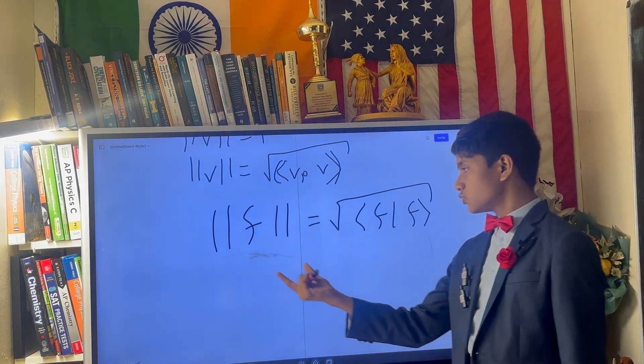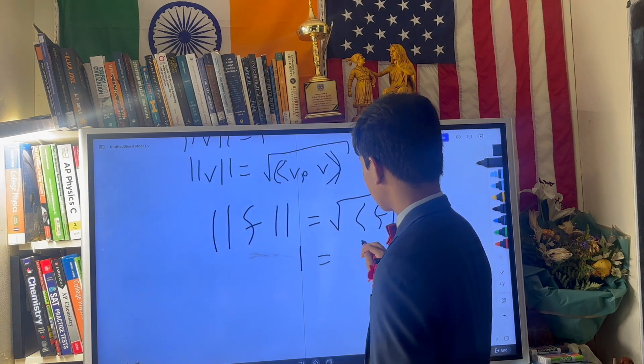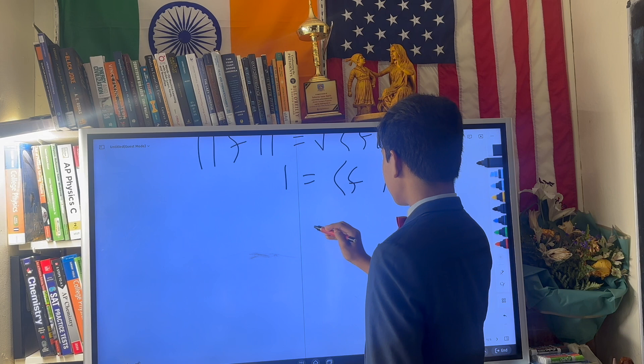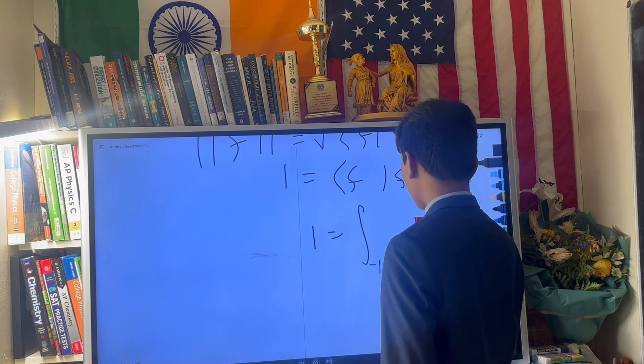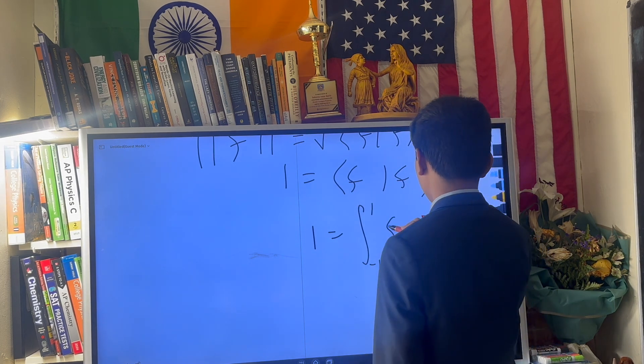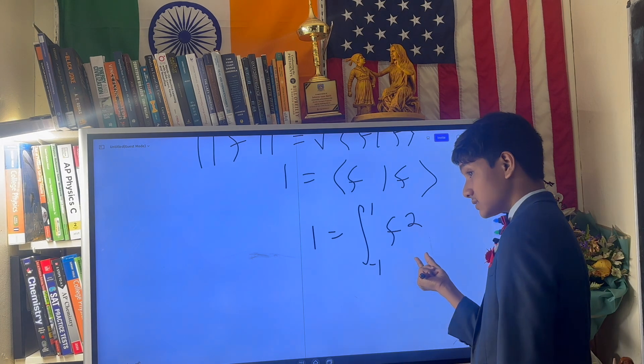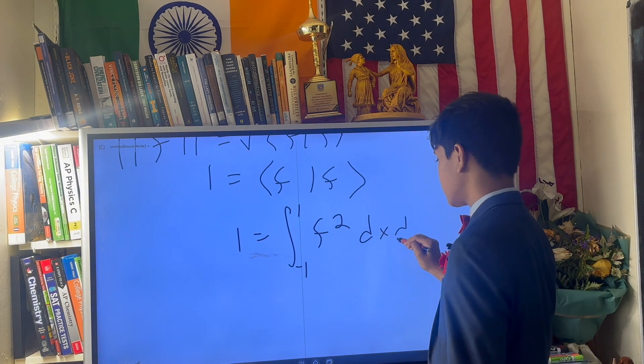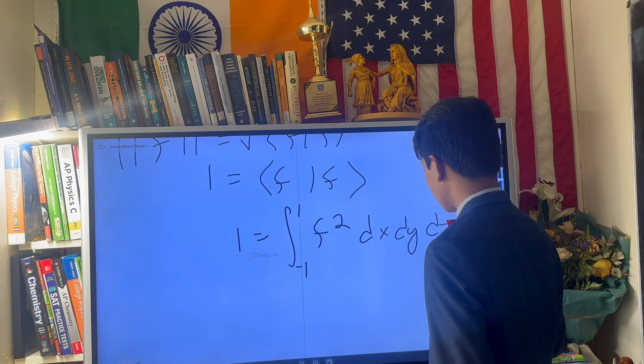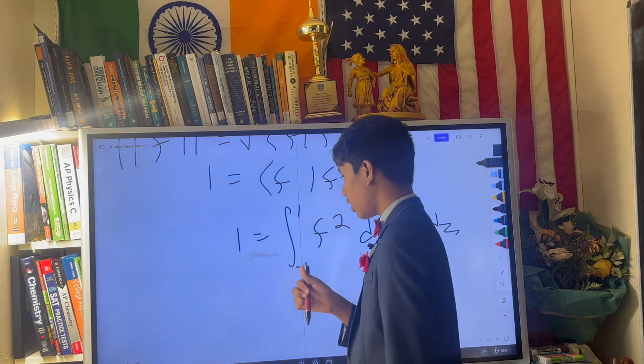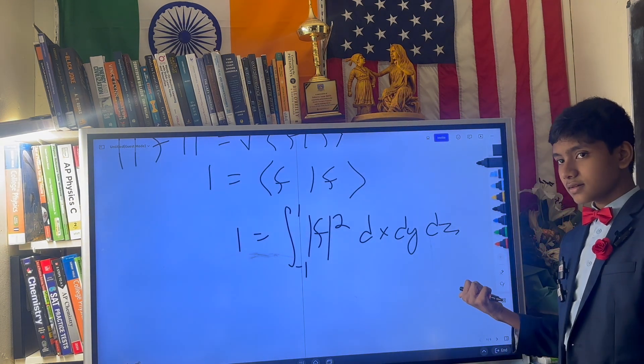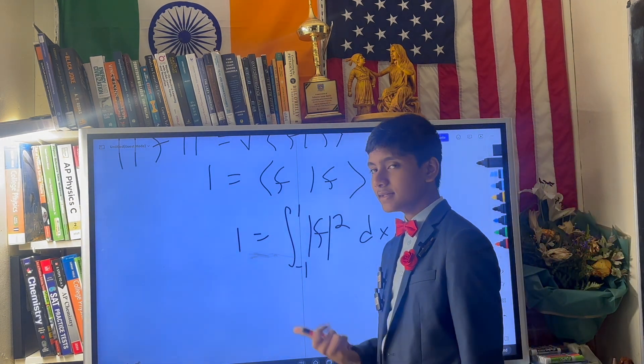So, if this is one, then the integral over some interval of f squared, this has to be positive, at least, if this is complex, then you can just take its modulus, if that is that, then this is normal.